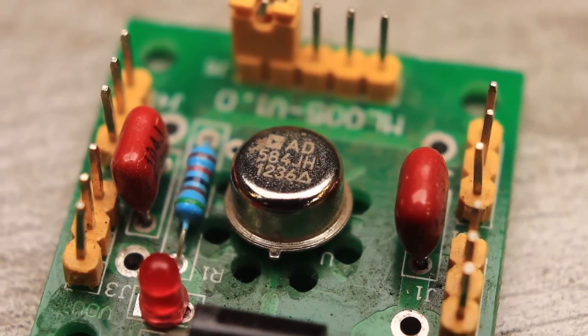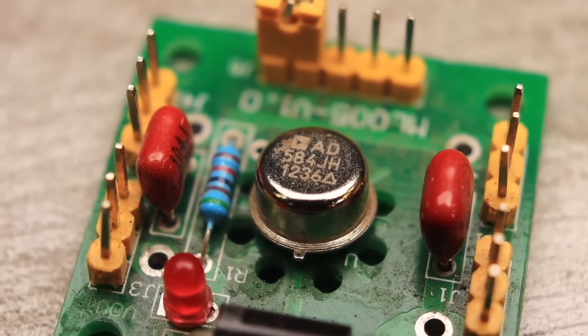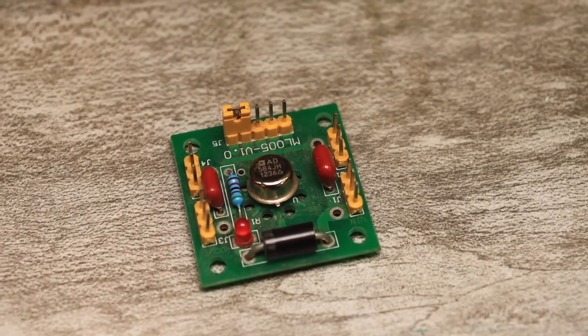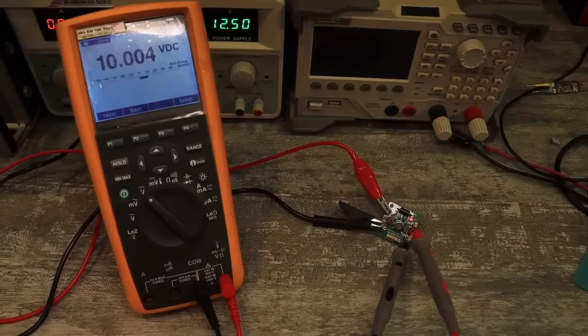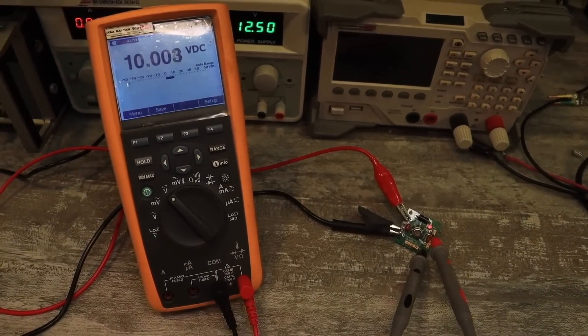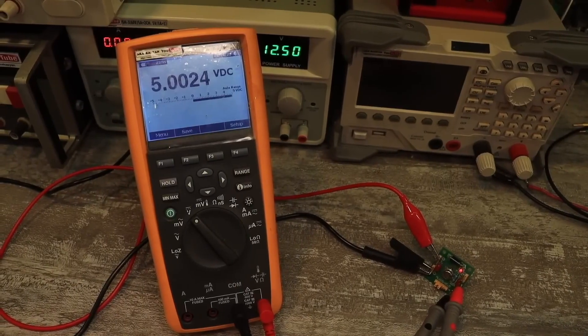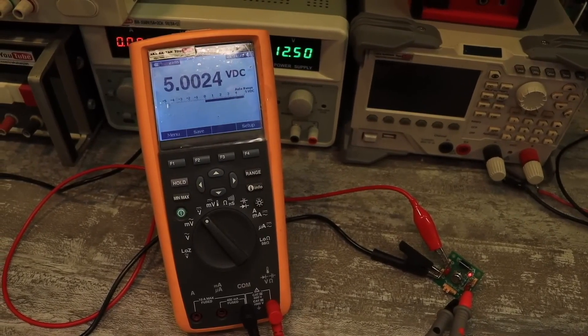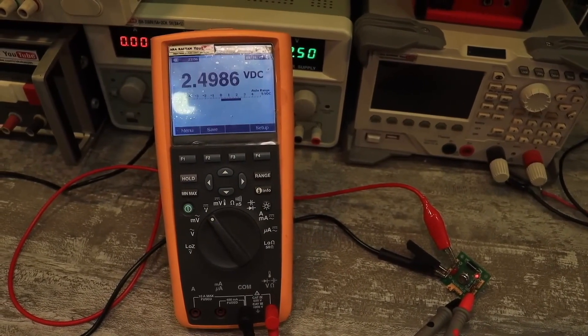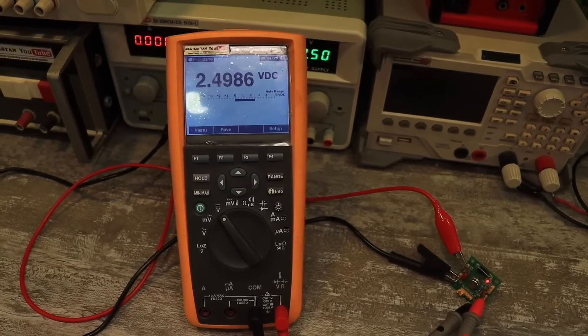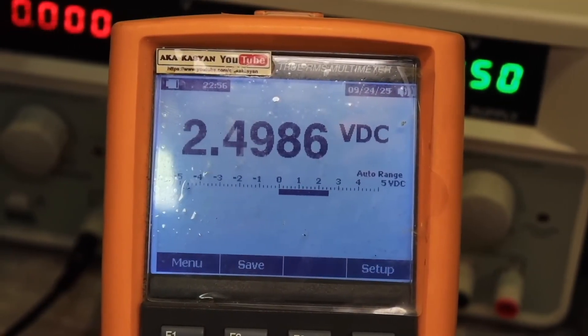On boards like these, you often see markings like JH. It's simple: J is the grade and H is the package type. So basically, it's the base version, but even that one will do just fine. A multimeter in the 10-volt range will show something like from 9.99 to 10.01 volts, and at two and a half volts, from 2.49 to 2.50. That's more than enough for everyday testing.